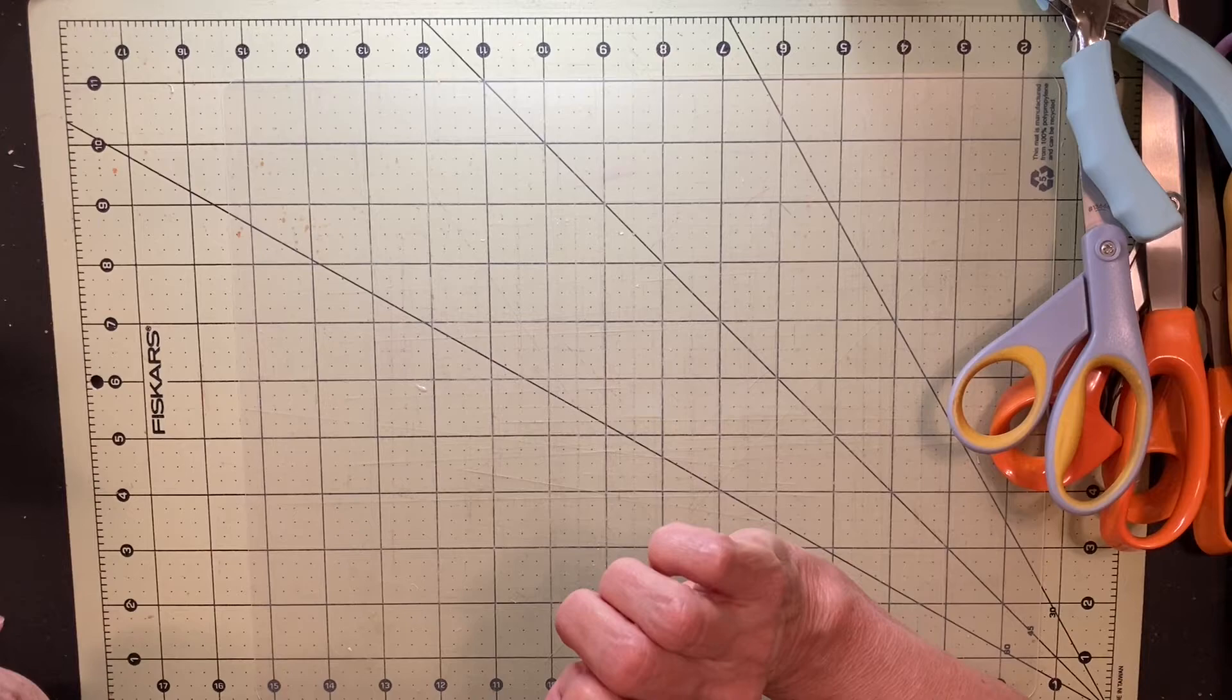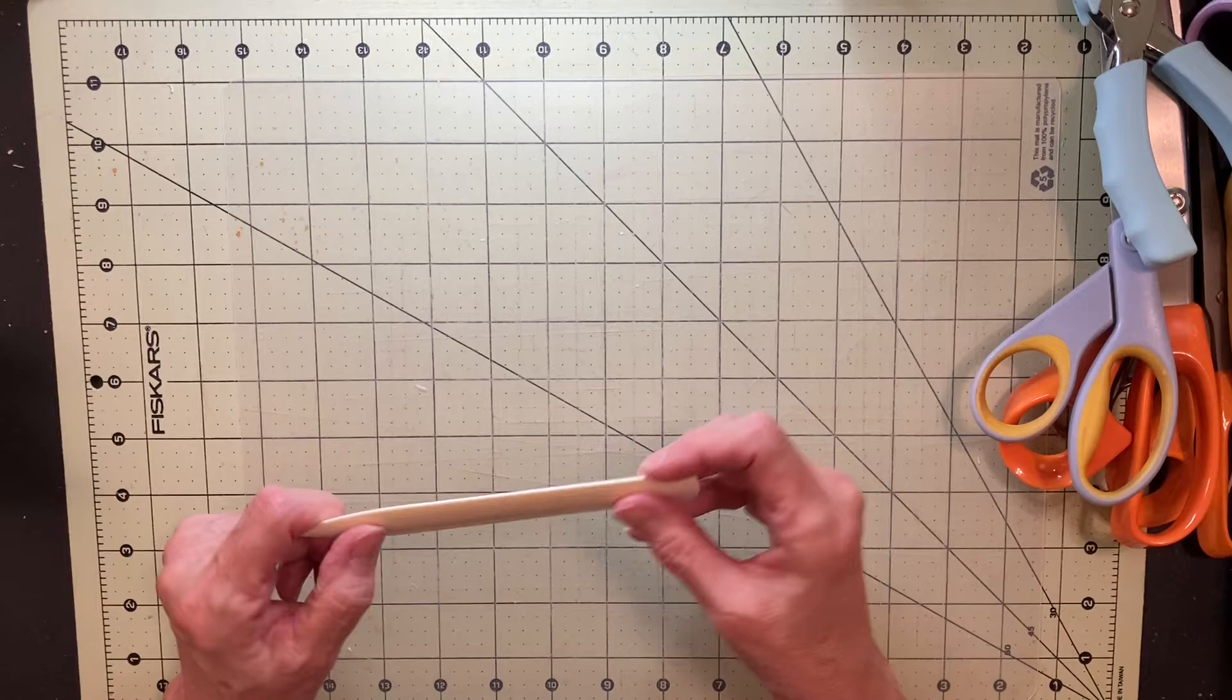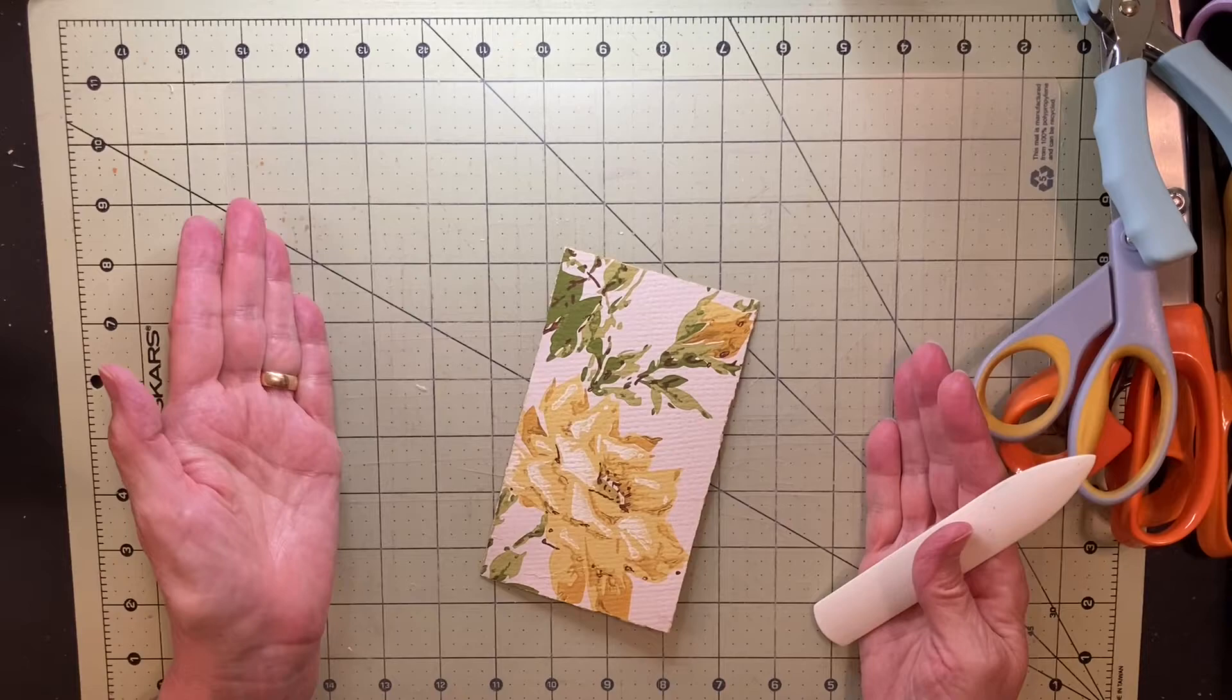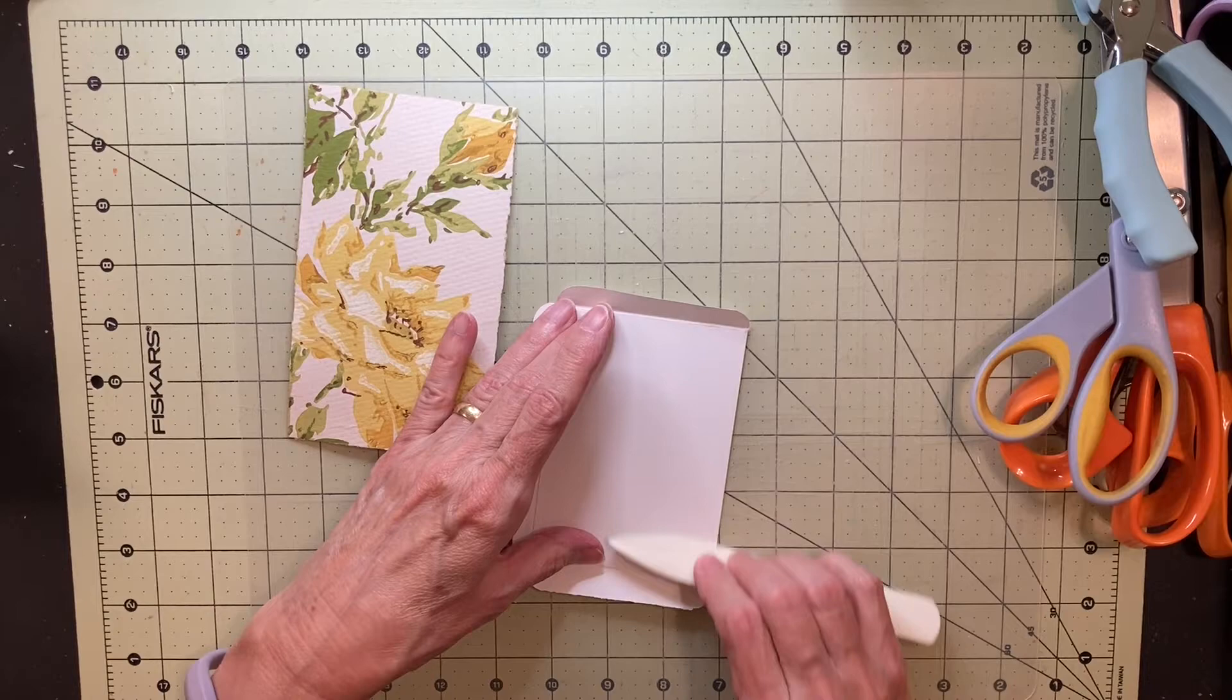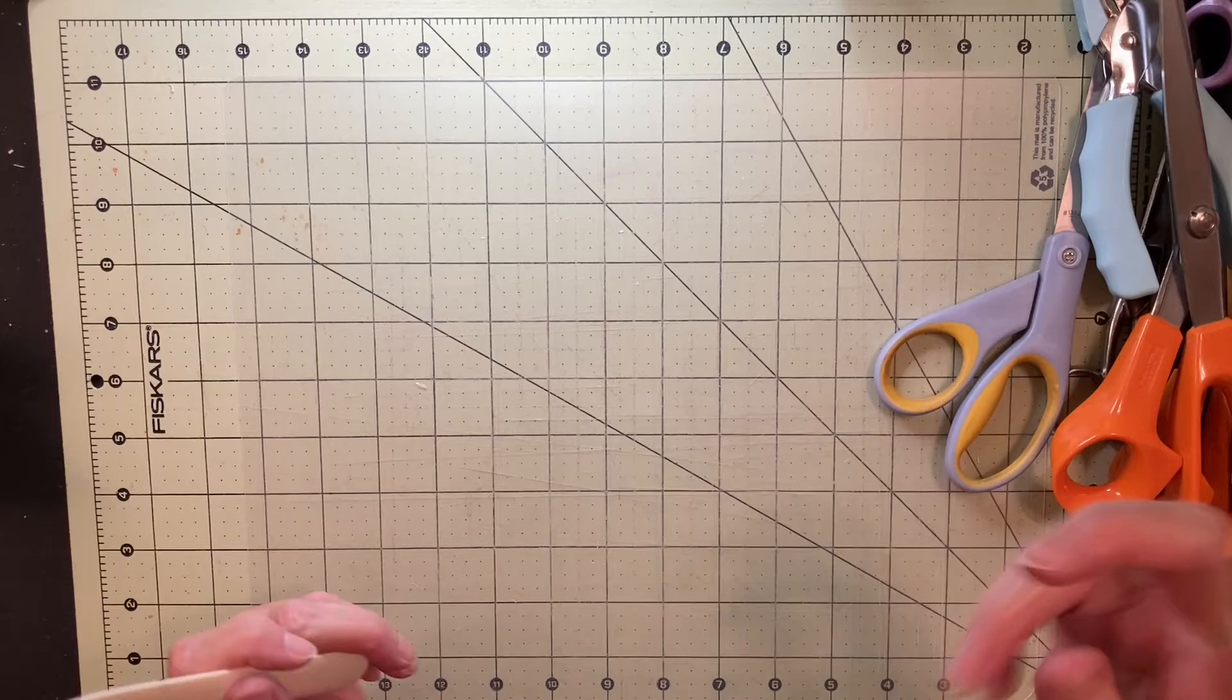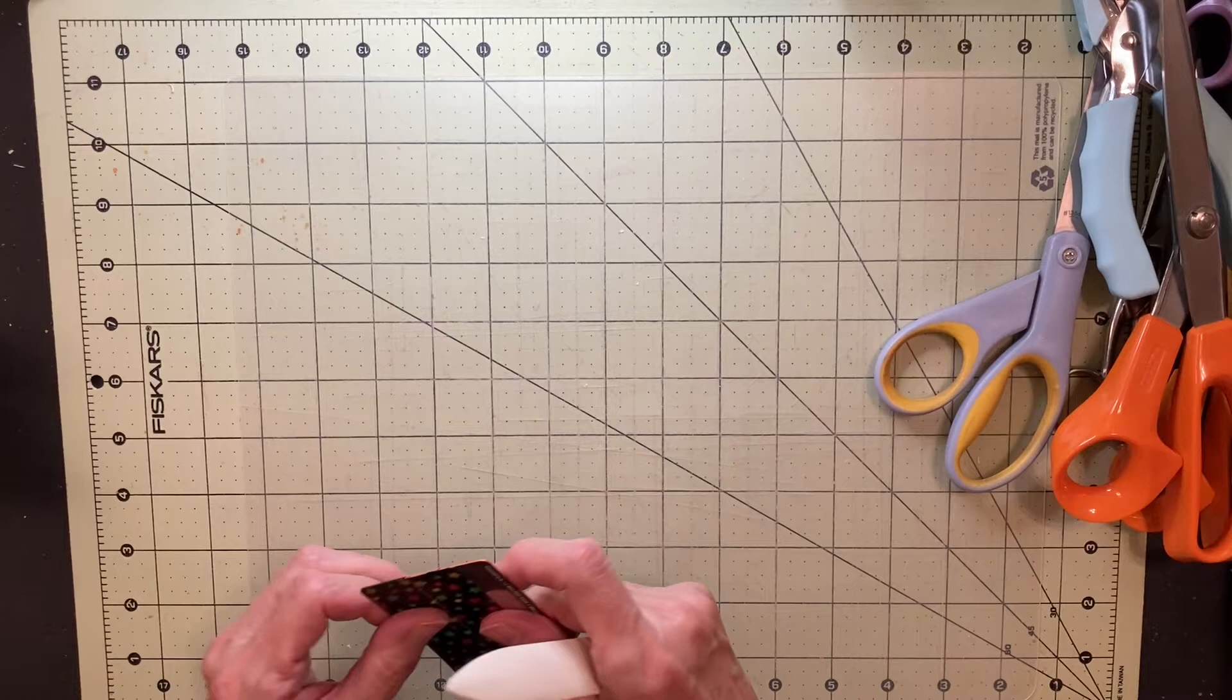Speaking of pressing things down, another nice thing to have is a bone folder. I got this one at Hobby Lobby. It's plastic. They also come actual bone. When I glue this down, it's really handy to have to just press the glue across and spread it out so that you have a better bond. It can be used for folding if you're folding a piece of paper. Fold it over and use it to make a nice crease on your folds. It's not absolutely necessary. You can use the handle of your scissors or the end of this brush thing.